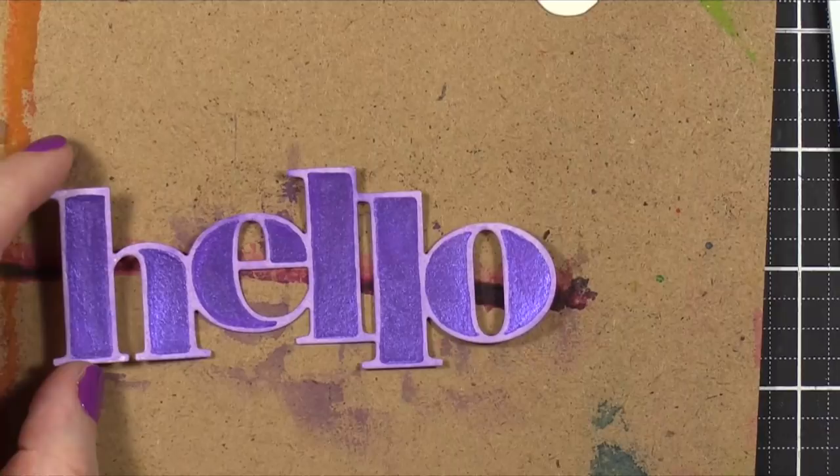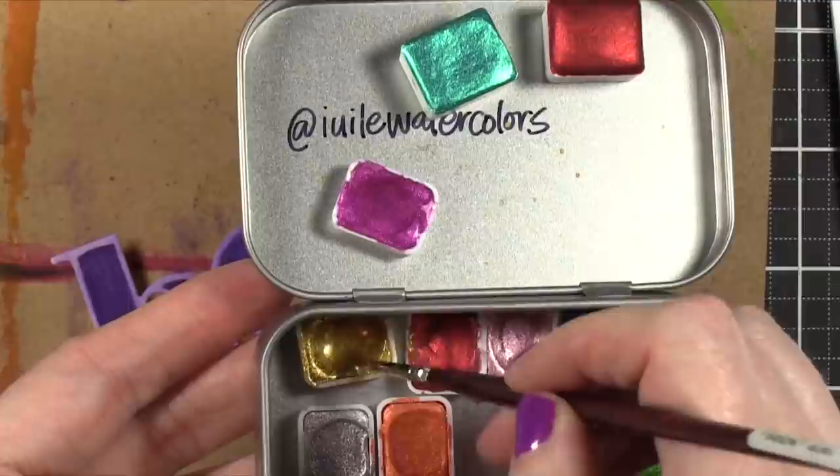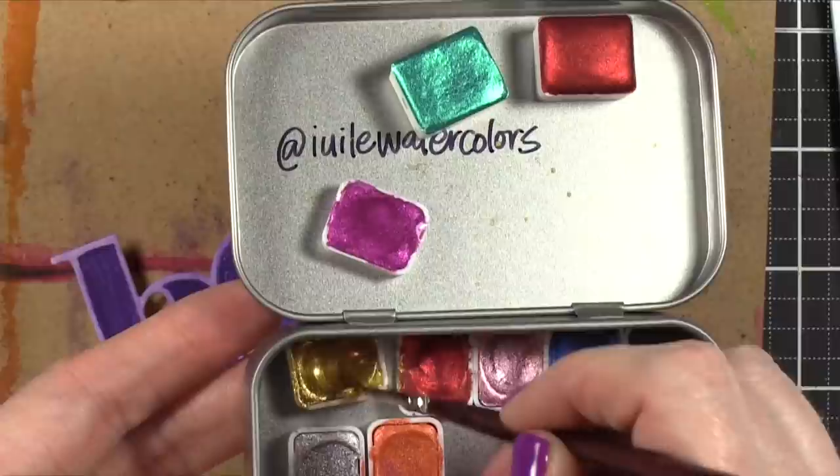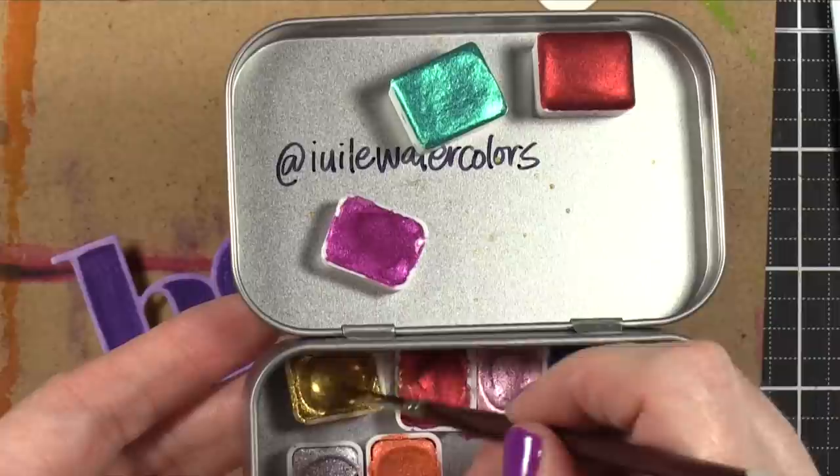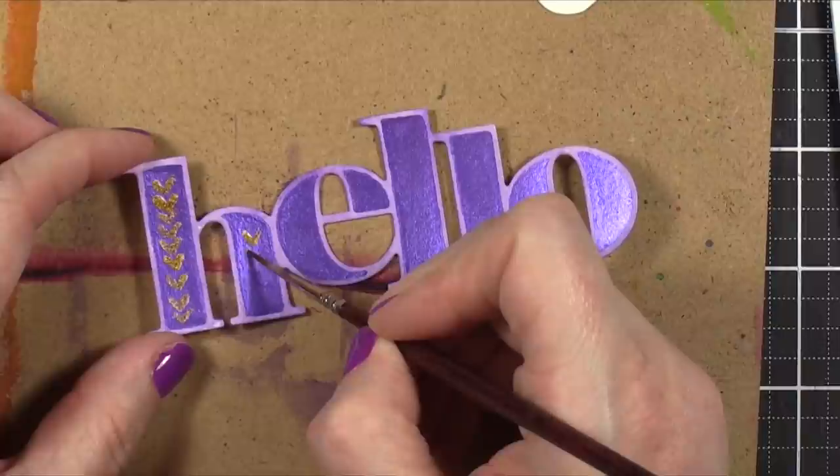Now I'm gonna switch to a different color. I'm going to go to this Christmas gold color. And this is my favorite gold of all the Yulee watercolors. She actually sent me another one that's called Oscar. I'm gonna try that one soon too. But this very shimmery pearlescent gold is just beautiful.